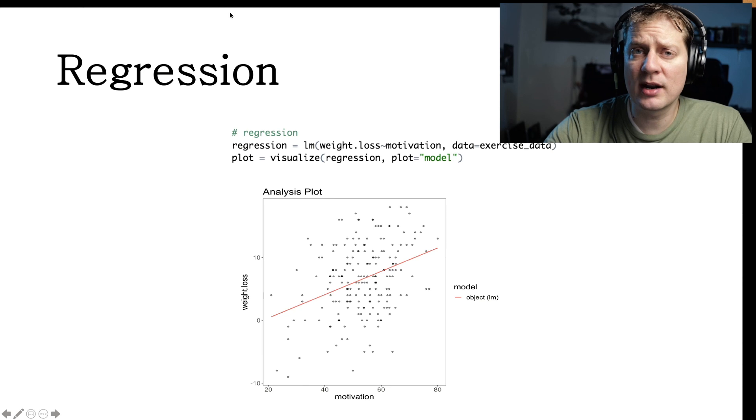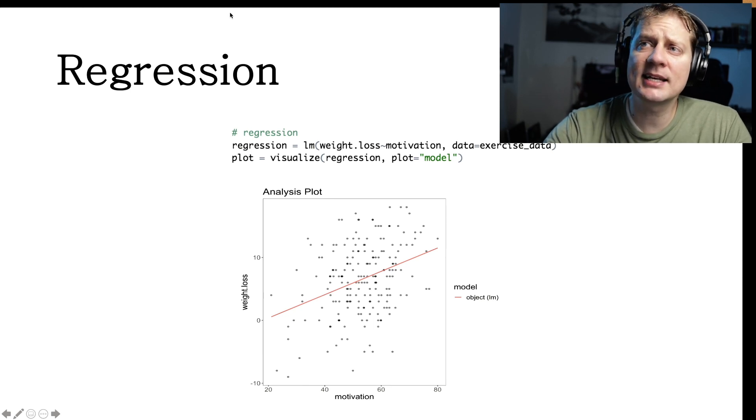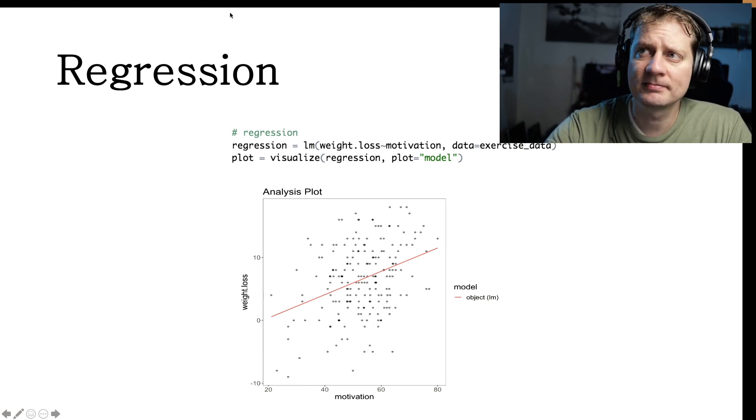Or maybe we're doing a regression where we are predicting weight loss from motivation. If we were to run this R code, we would use the visualize function and it shows us a scatterplot with a regression line.